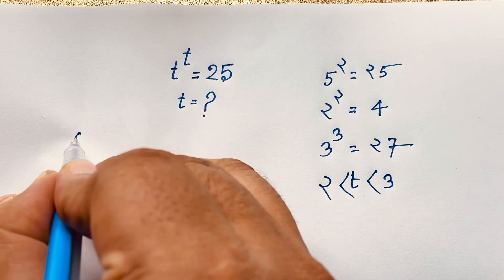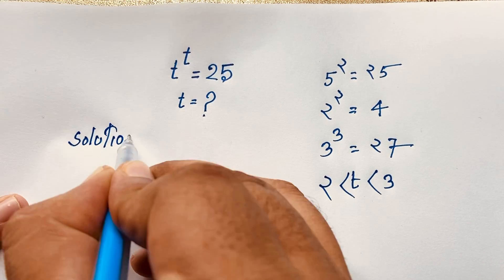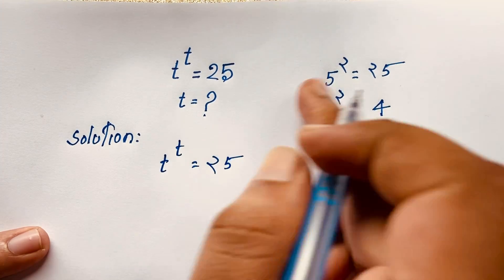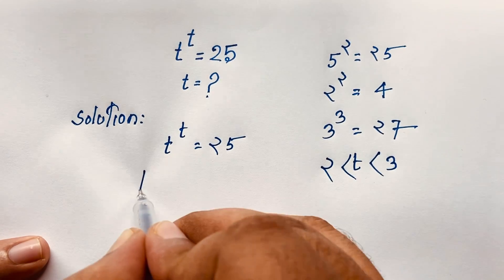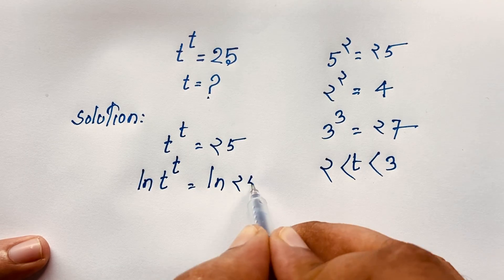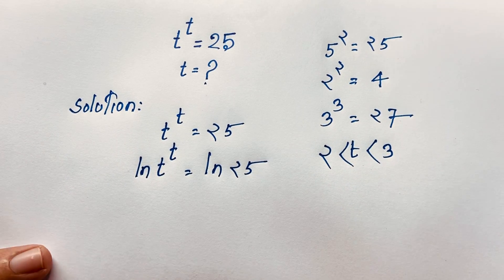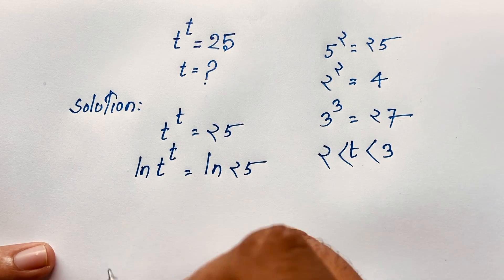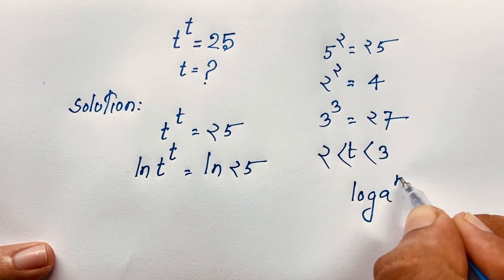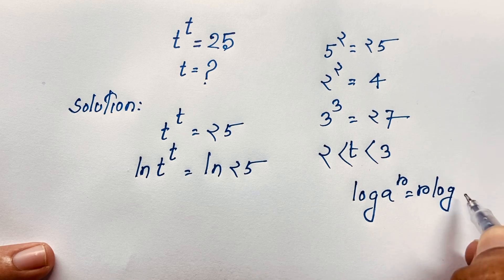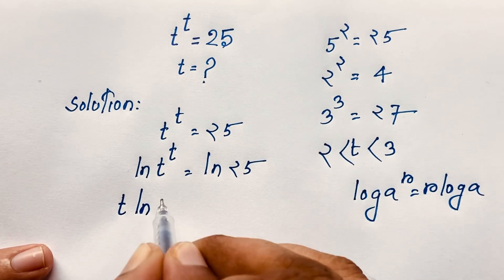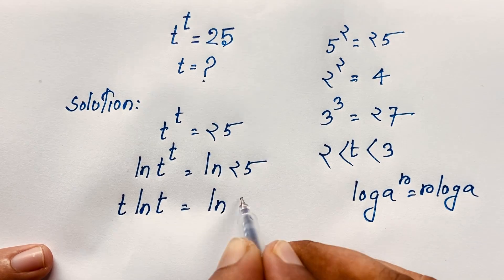Now our math solution. We have t to the power of t is equal to 25. I apply ln to both sides, so ln of t to the power of t is equal to ln 25. Using the power rule — we know that ln of a to the power of r equals r times ln a — the exponent moves in front, giving us t·ln(t) = ln(25).